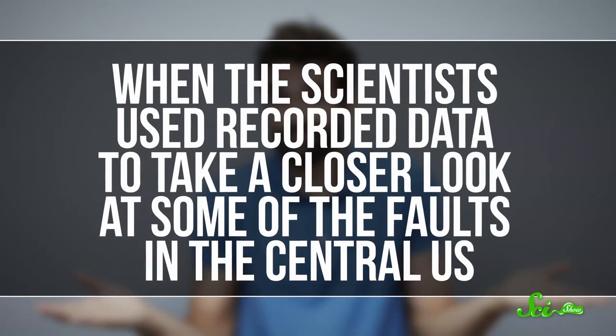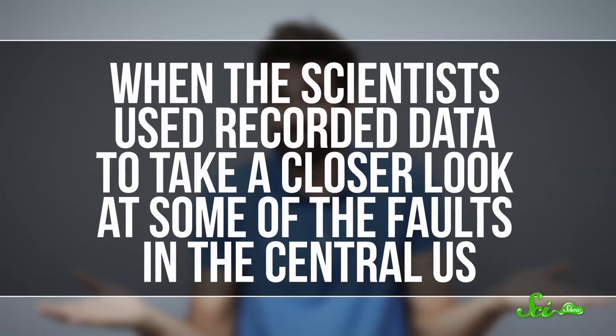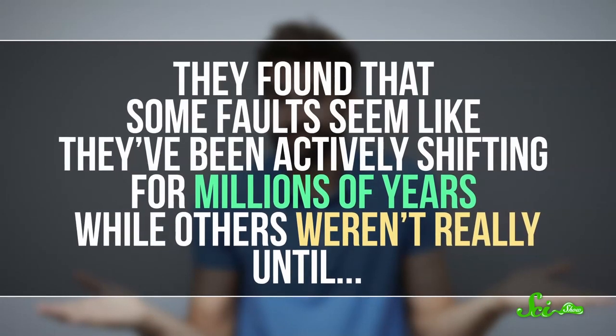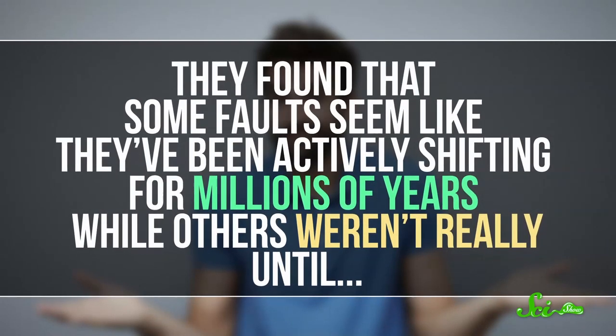When the scientists used recorded data to take a closer look at some of the faults in the central U.S., they found that some of the faults seem like they've been actively shifting for millions of years, while others weren't really, until, you guessed it, people started messing with the crust. Have we learned nothing from all of the sci-fi disaster movies? This never ends well. Paul Giamatti is in a room somewhere, warning you.